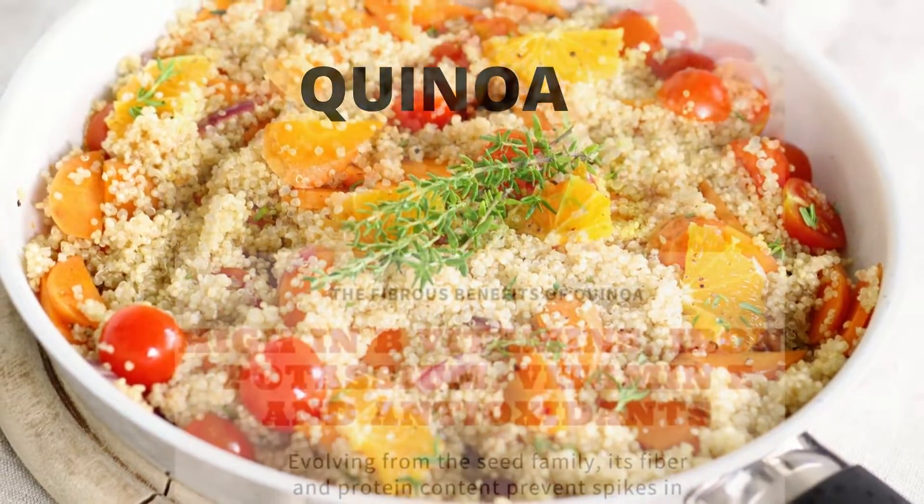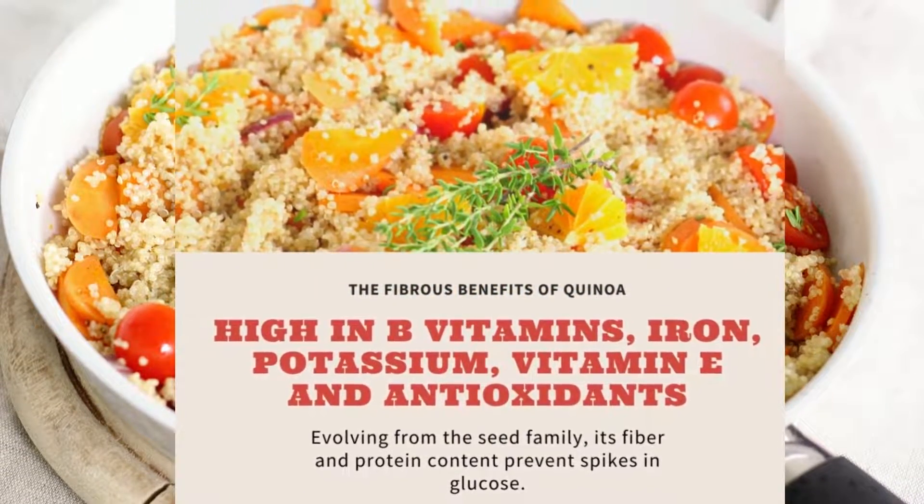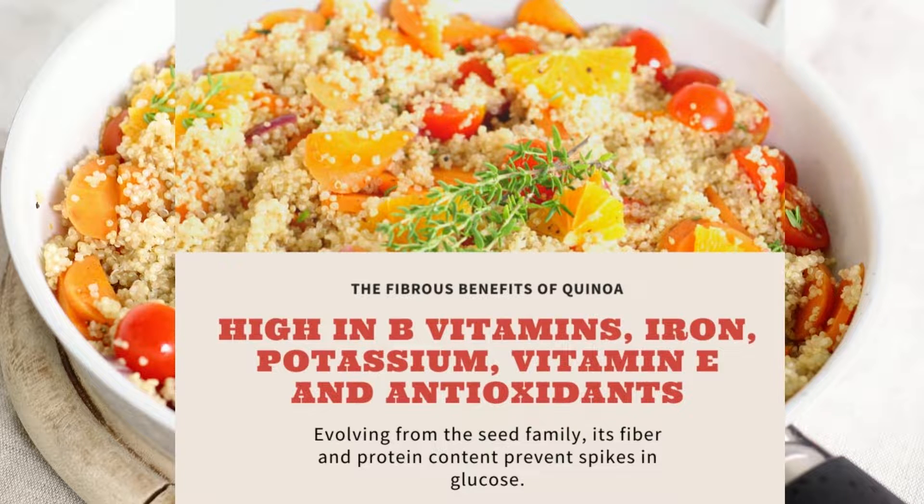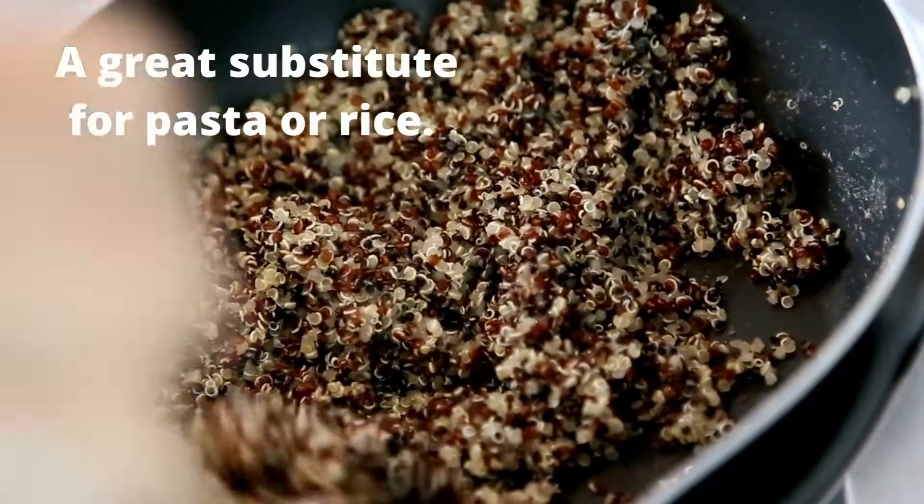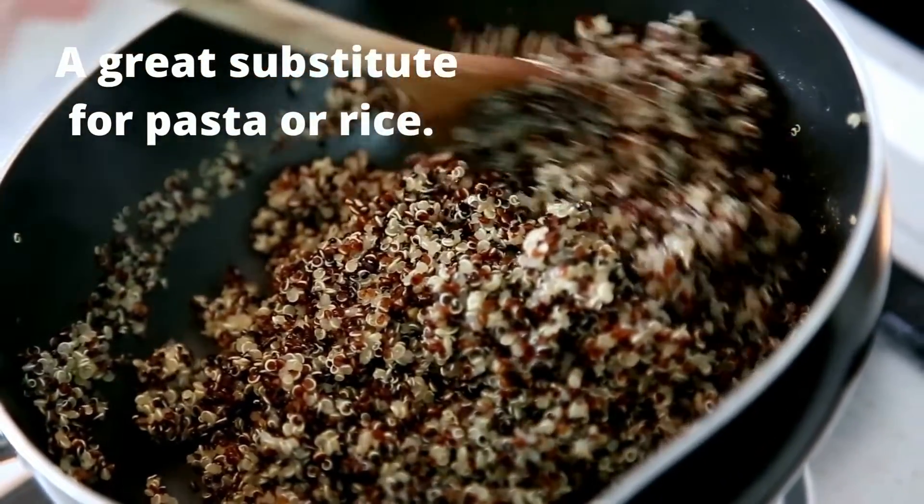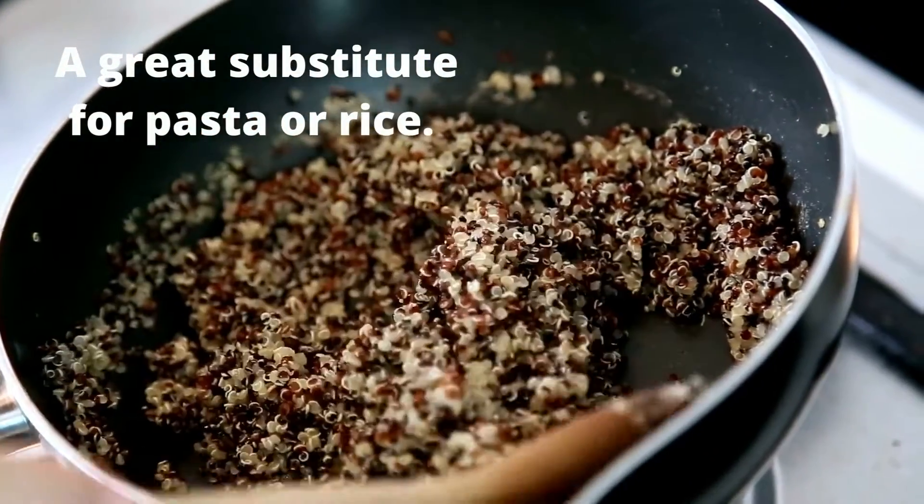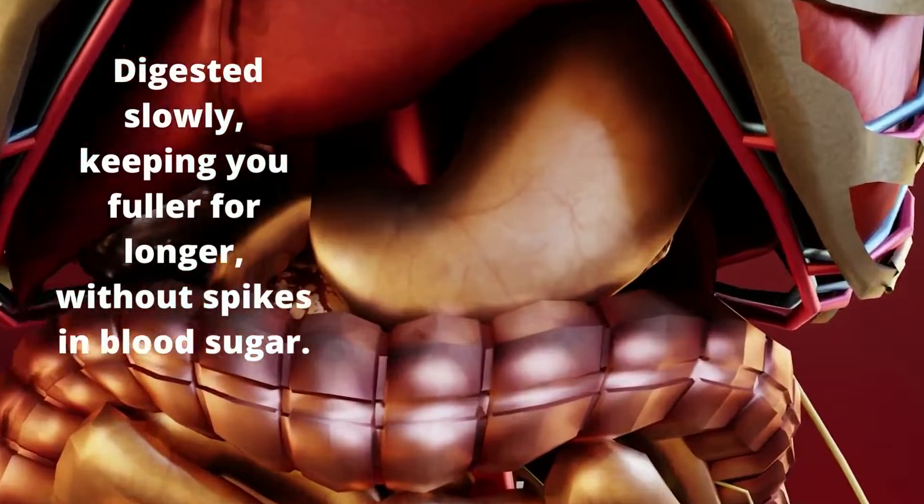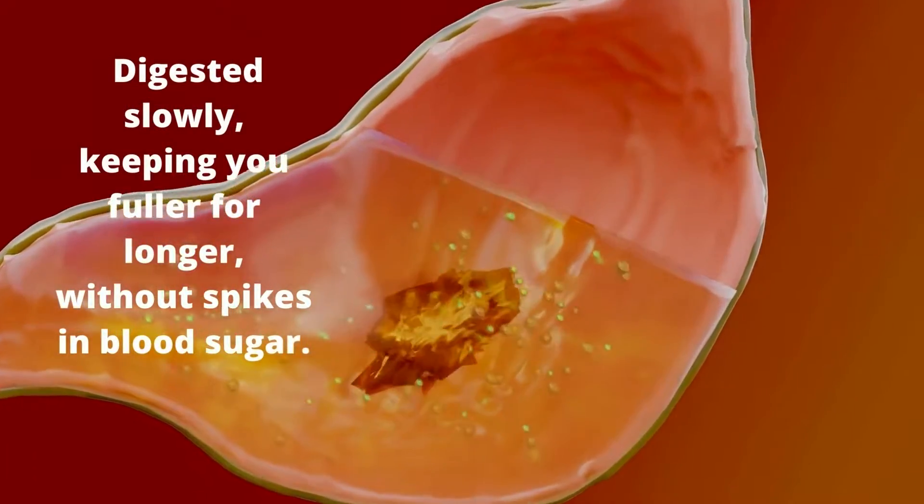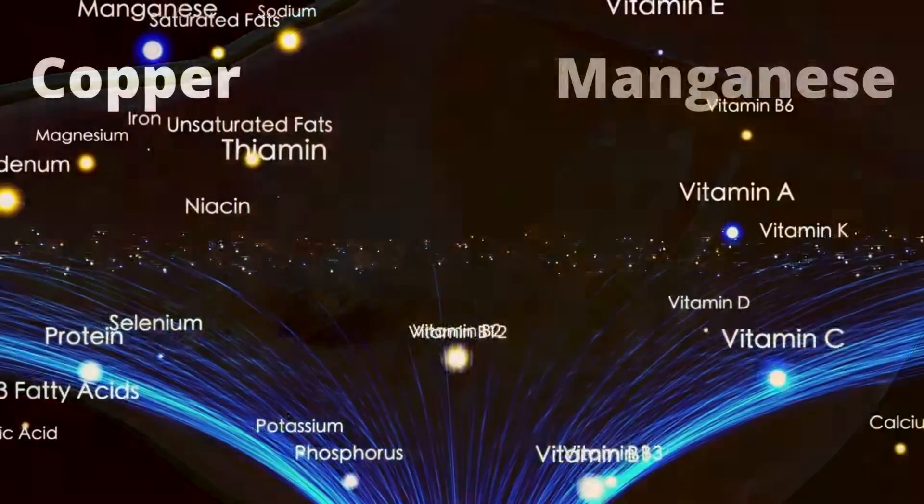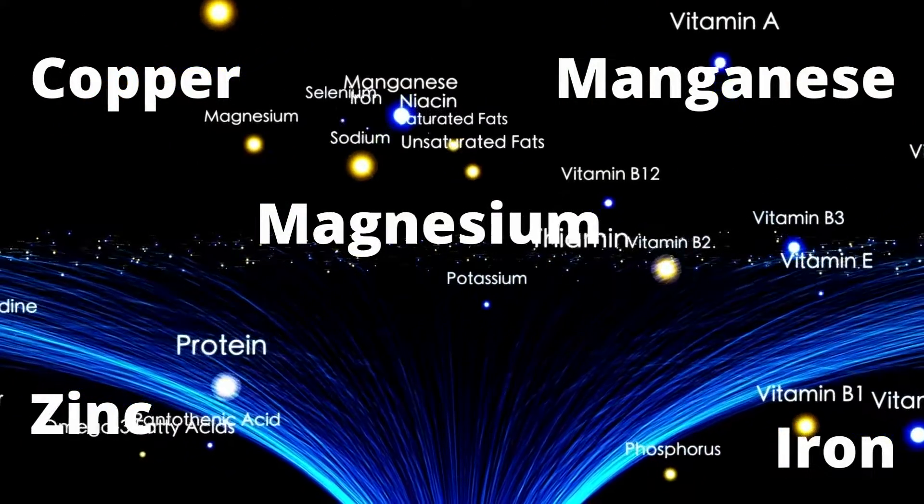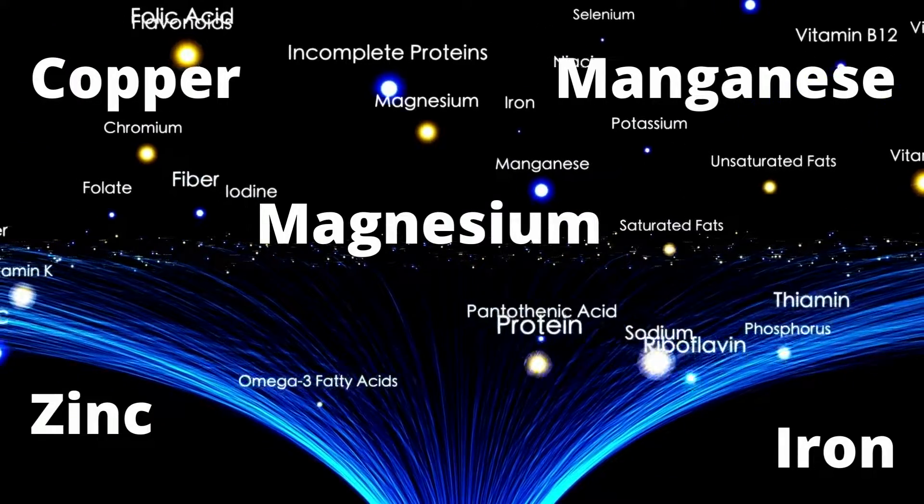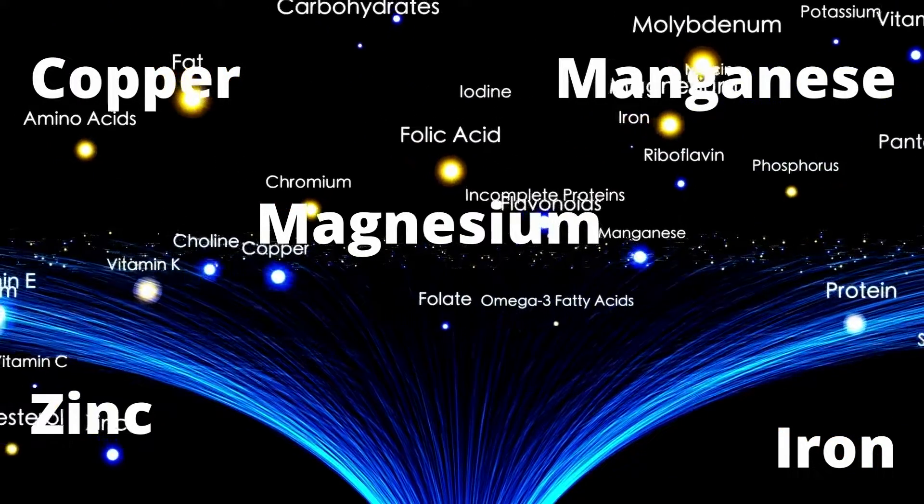Quinoa. Look no further than this cute, seedy little number that makes a great substitute for pasta or rice. Considered a complete protein, the combination of fiber and protein means it's digested slowly, keeping you fuller for longer without spikes in blood sugar. It is also a good source of copper, manganese, magnesium, iron and zinc. All these nutrients are vital for adequate cell functioning.